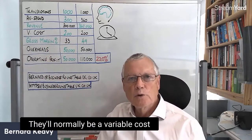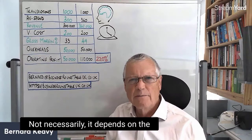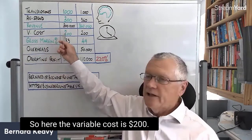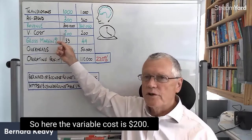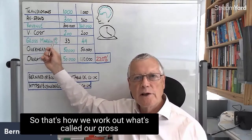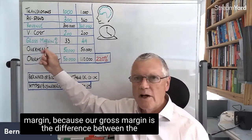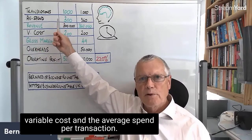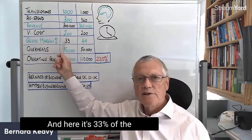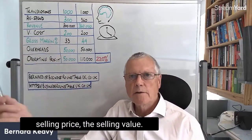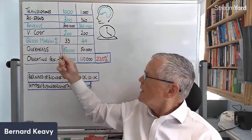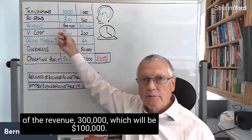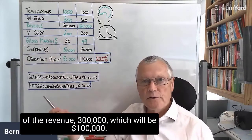There'll normally be a variable cost associated with everything we sell, depending on the type of business. Here the variable cost is two hundred. So that's how we work out what's called our gross margin, because gross margin is the difference between the variable cost and the average spend per transaction. Here it's thirty three percent of the selling price, so our gross profit will be a third of the revenue — three hundred thousand — which will be one hundred thousand.